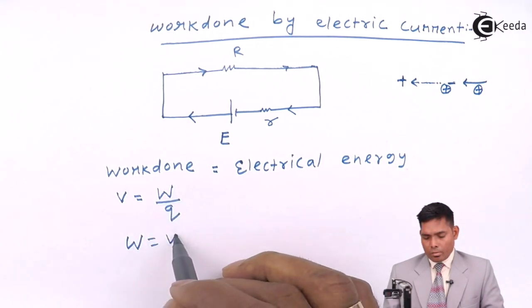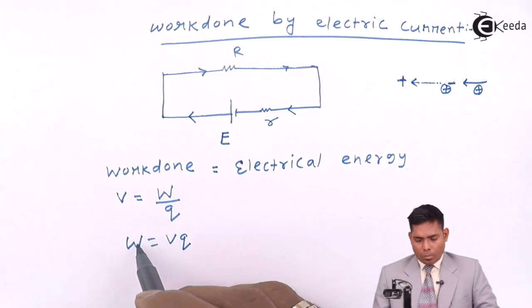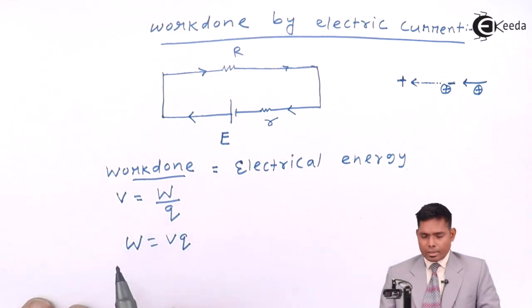So from this, W is V into Q. W is work done, that is electrical energy.